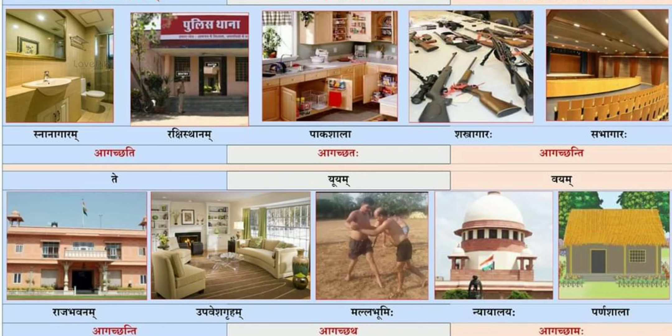Then the last line: Rajabhavanam. Rajabhavanam means palace. Then Upaveshagriham — resting hall. The third picture: Mallabhoomihi. Mallabhoomihi means fighting field.